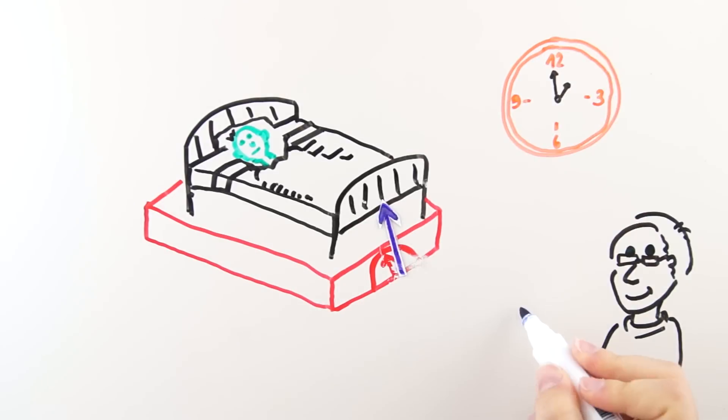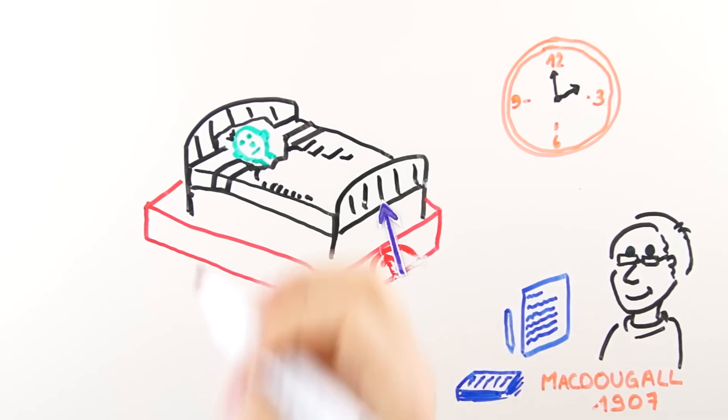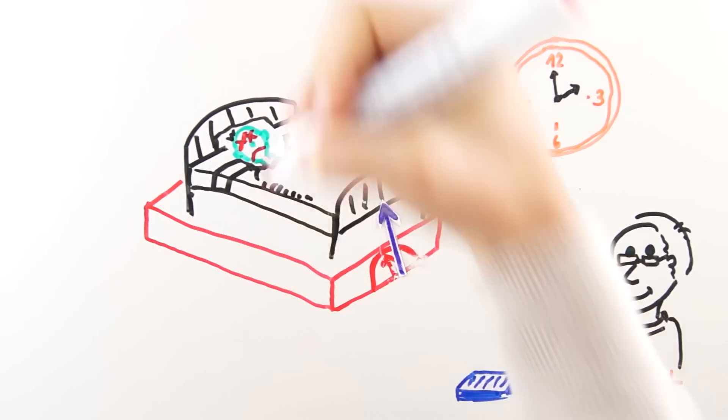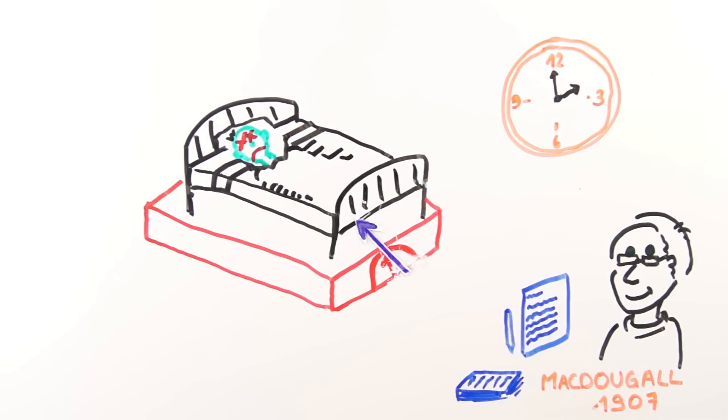In order to track the smallest changes in weight, MacDougall stared at the scale for hours and hours. Eventually, at the precise moment of a patient's death, he noticed a loss in weight that couldn't be accounted for,